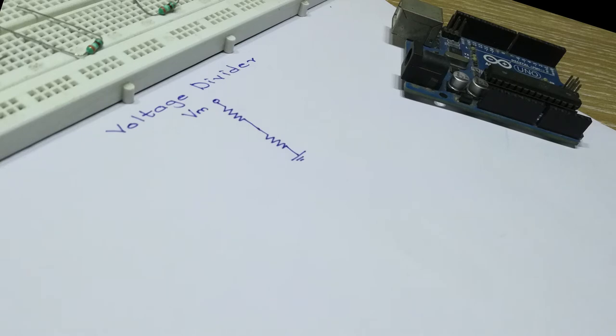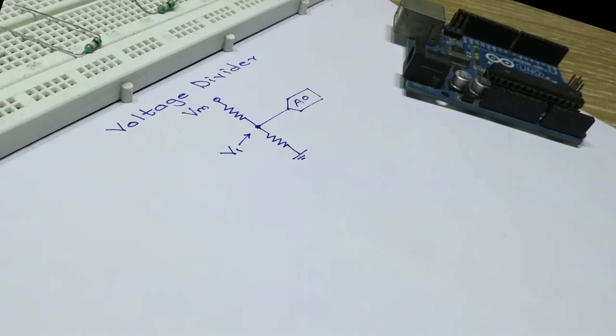A voltage proportional to the measured voltage will appear at the junction of two resistors. This junction can then be connected to the analog pin of the Arduino. The voltage can be found out using this formula.